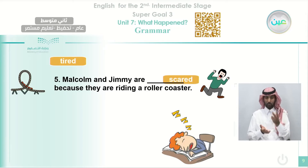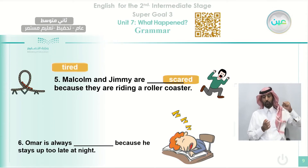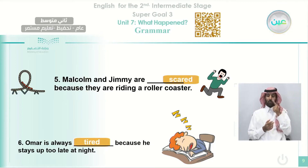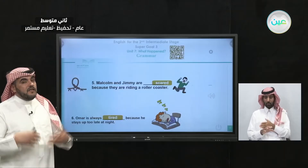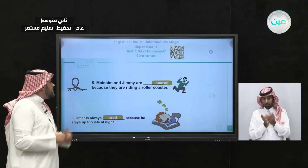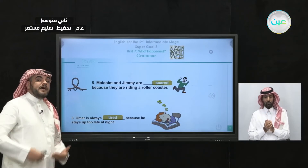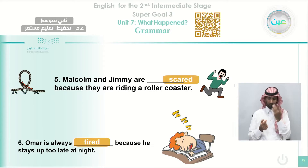Omar is always tired. Why is he tired? Because he stays up too late at night. He sleeps late, so when he goes to school, as you can see in the picture, he feels sleepy and tired. He cannot concentrate on his lessons or with the teachers.